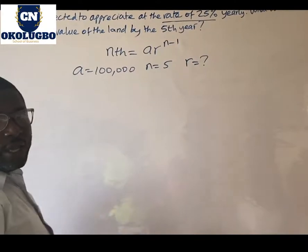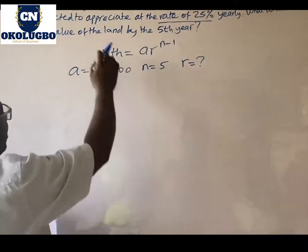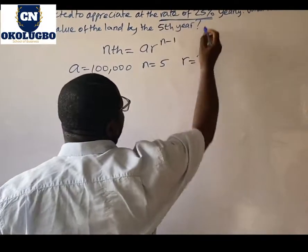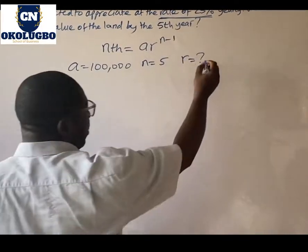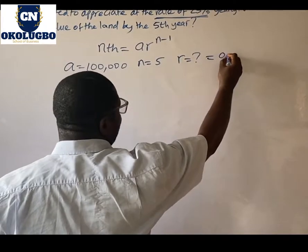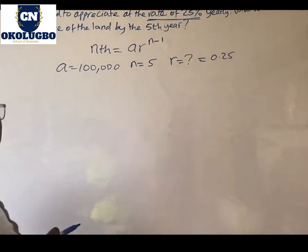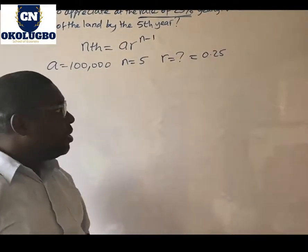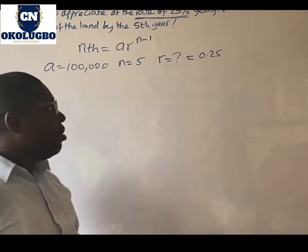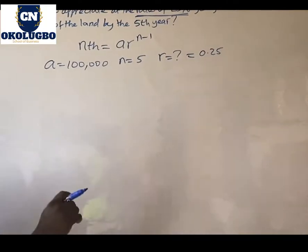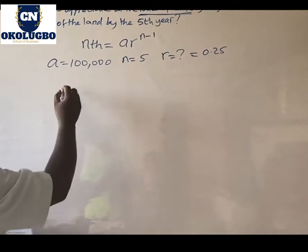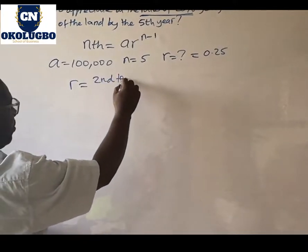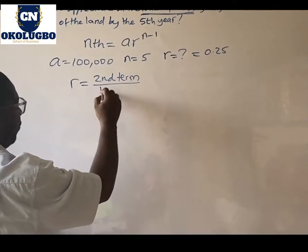Now some students will think that because we said it's expected to appreciate at a rate of 25% that we're going to use 0.25 representing the rate. This will not be correct. Why do I say that?